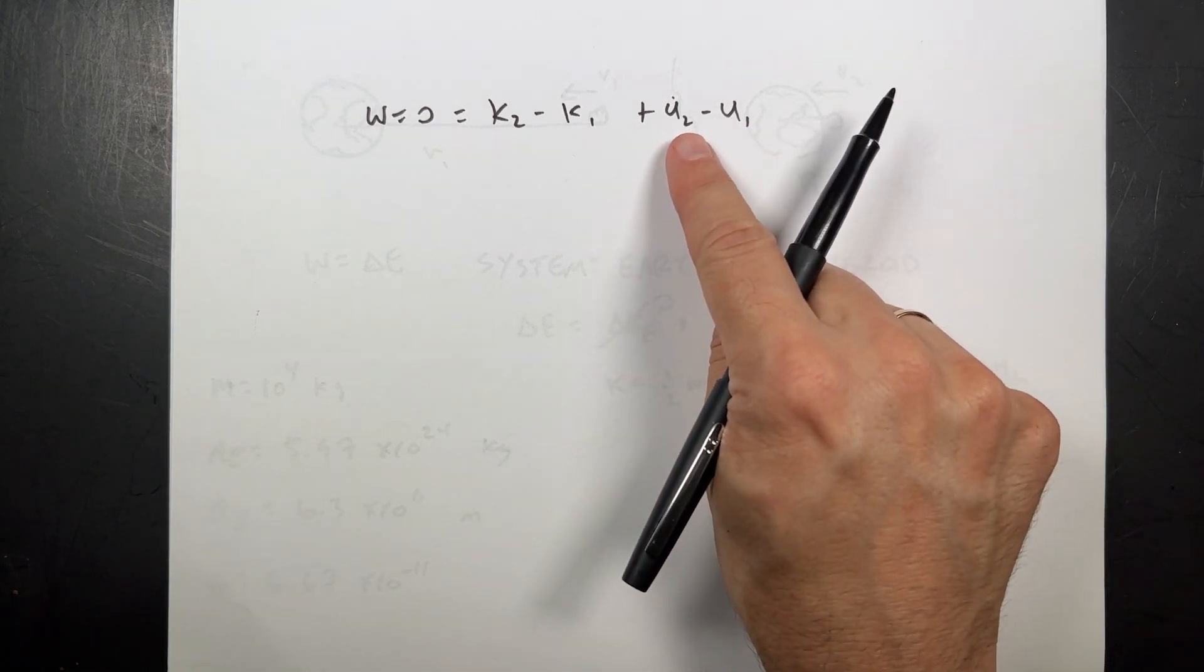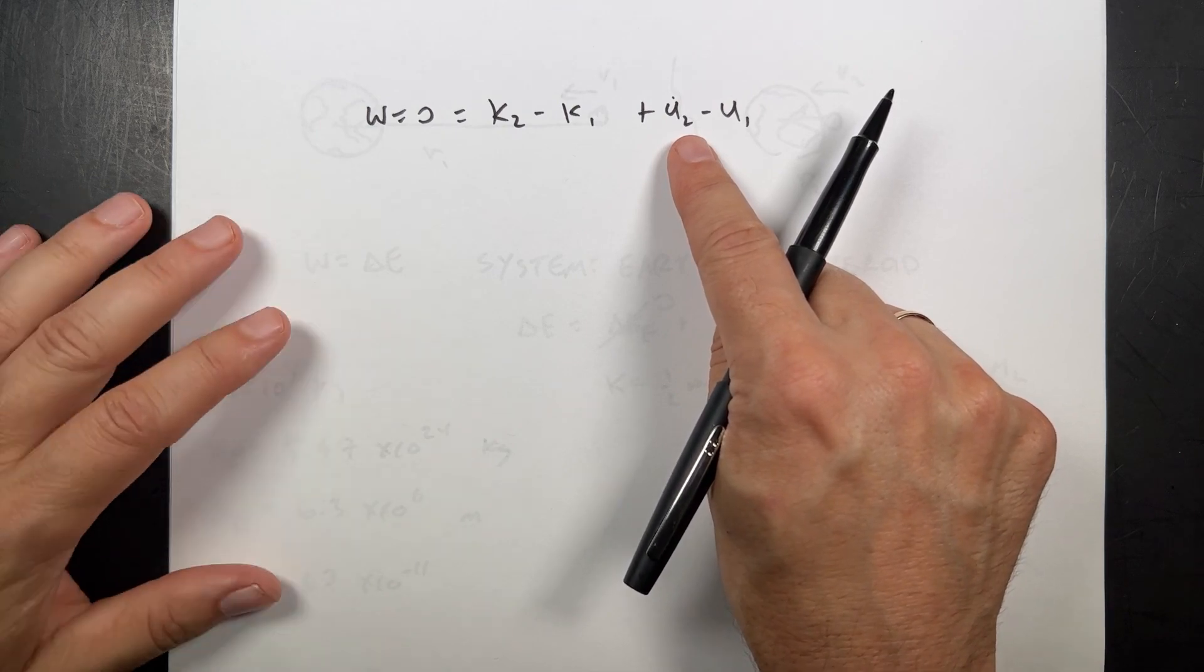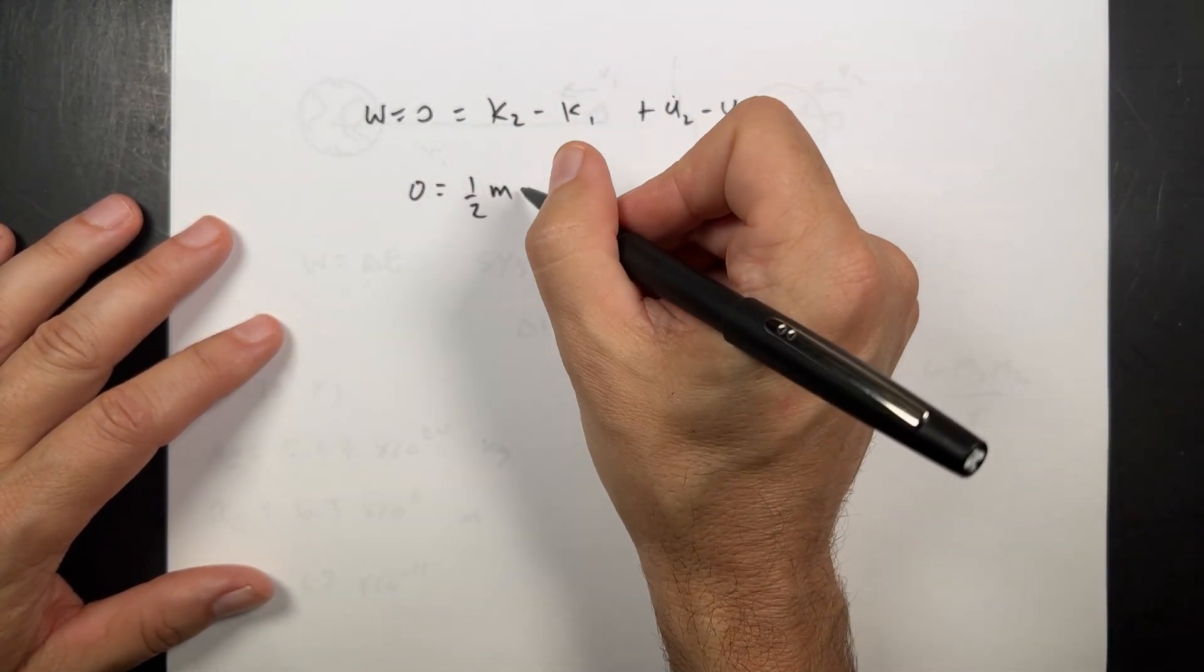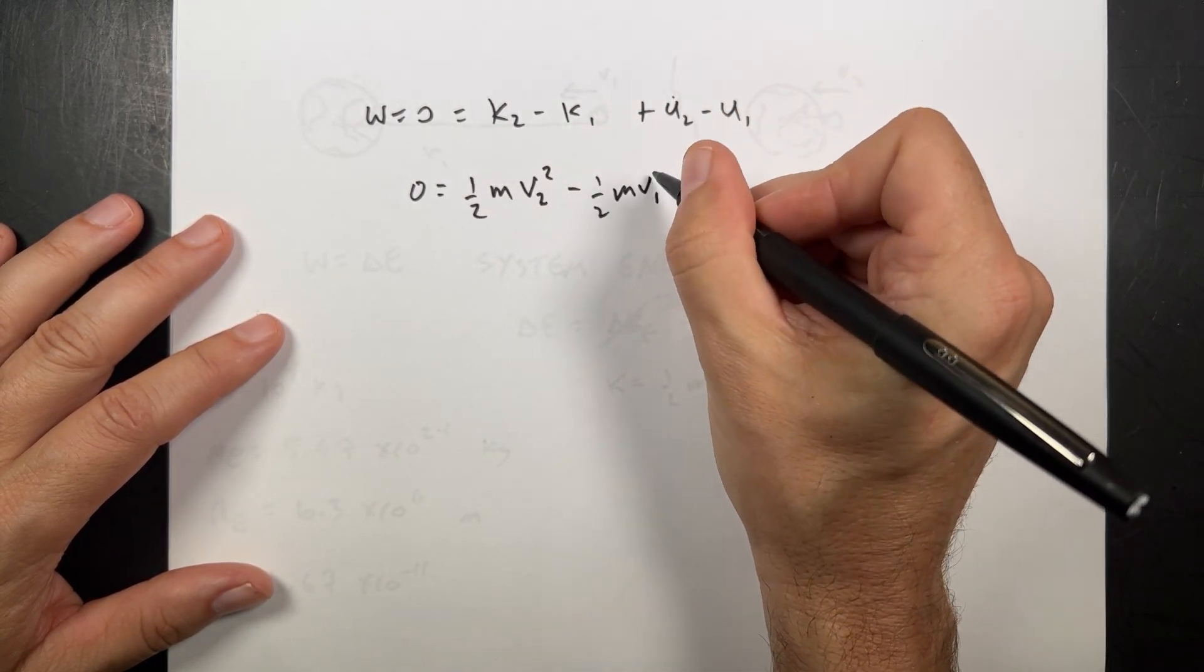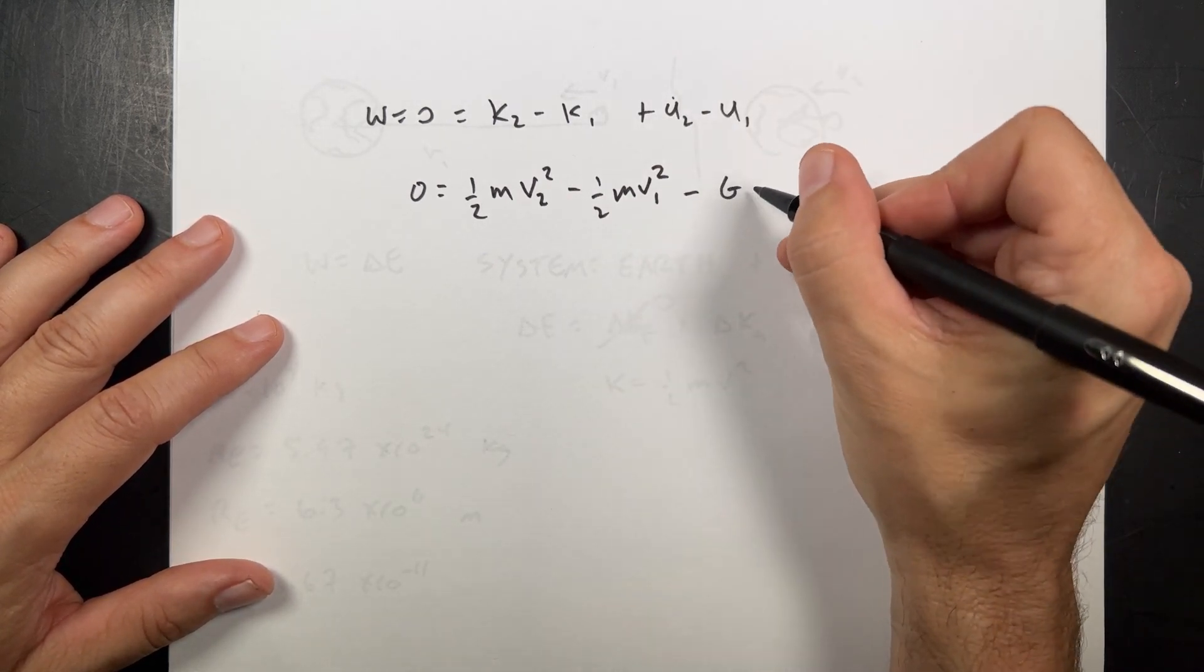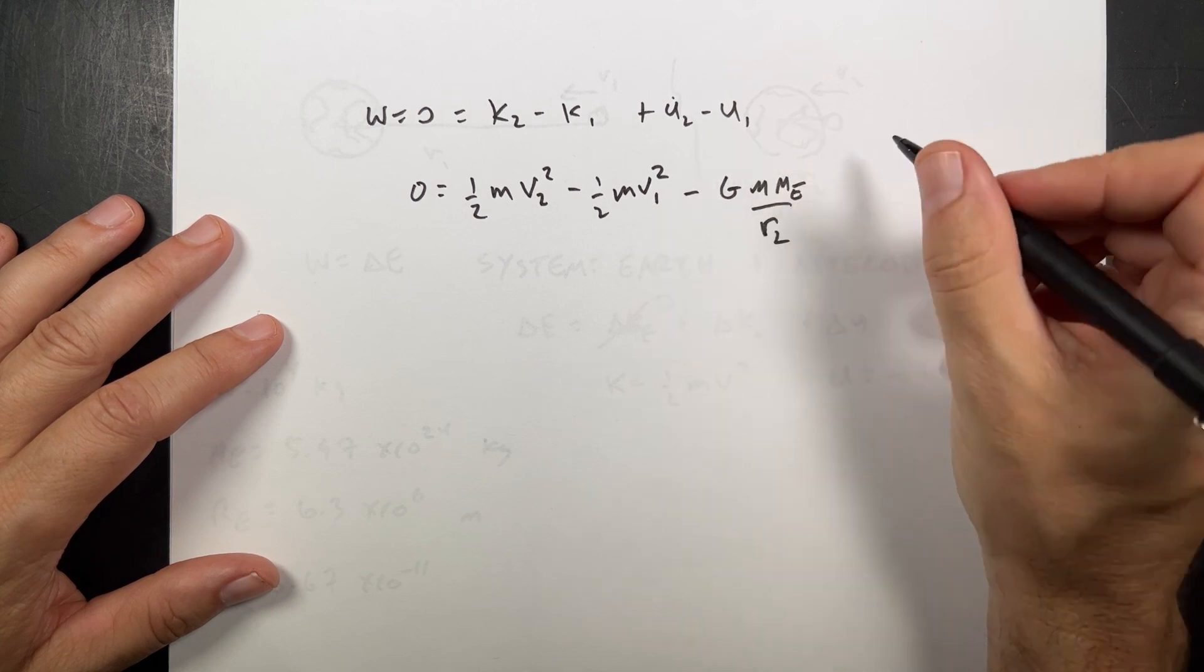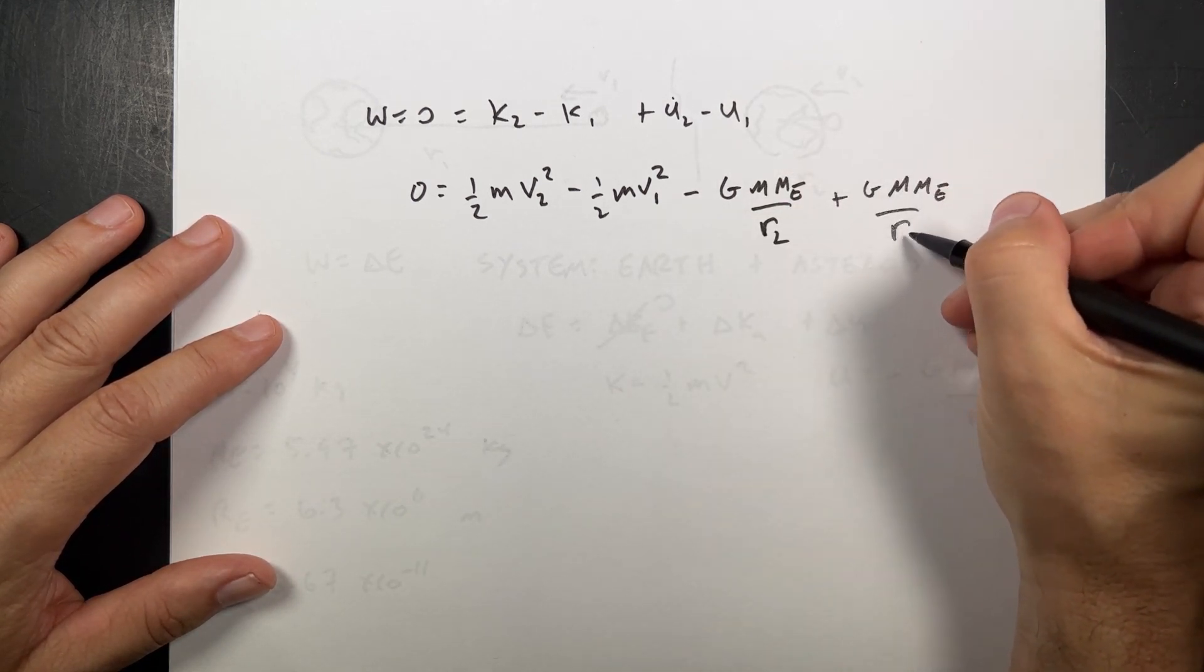Be careful. Just because it gets to the surface of the Earth does not mean it has zero gravitational potential energy. So let's put in all our values here, or all our expressions. So I have zero equals one-half m. m is a mass of the asteroid. v2 squared. That's what I'm looking for. Minus one-half m v1 squared. Now, this potential is negative. So it's going to be minus g m mass of the Earth over r2, which is the radius of the Earth, minus a negative, so plus g mass of the Earth over r1.